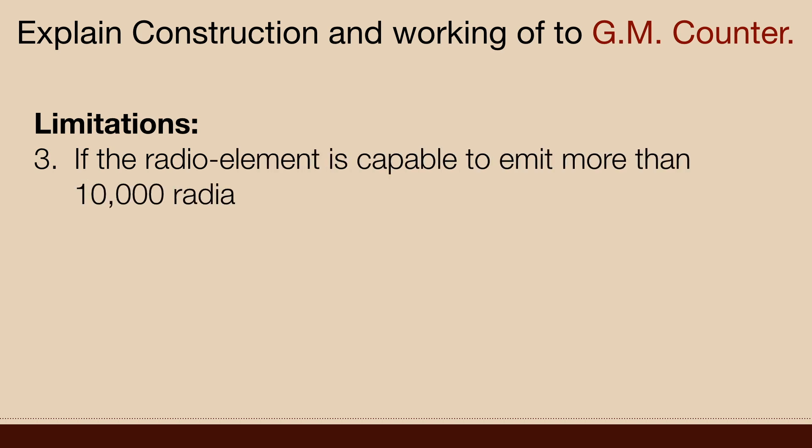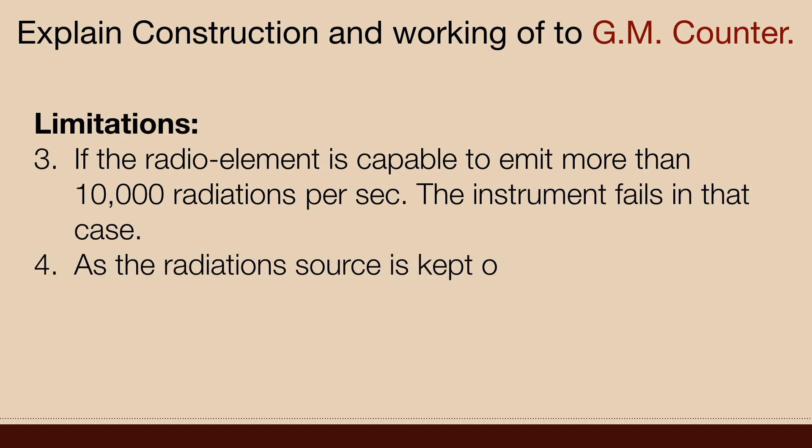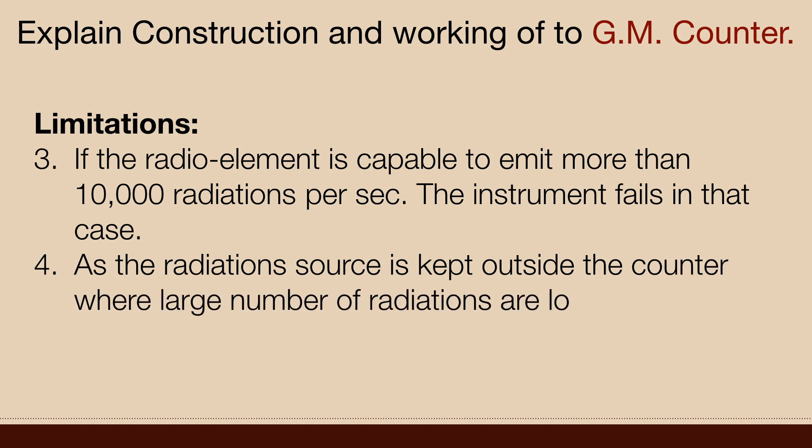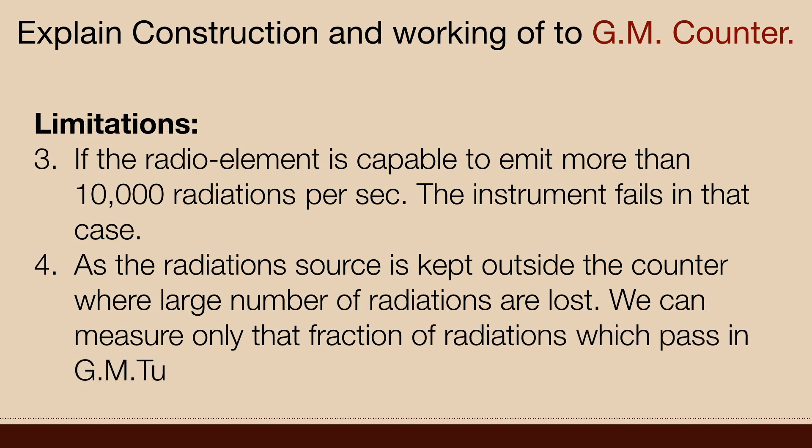If the radio element is capable to emit more than 10,000 radiations per second, the instrument fails in that case. As the radiation source is kept outside the counter where large number of radiations are lost, we can measure only that fraction of radiation which passes in the GM tube.